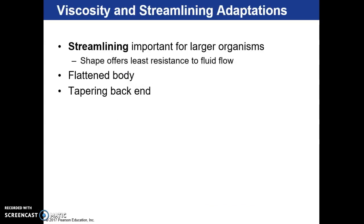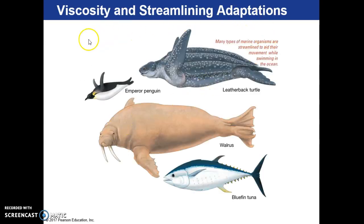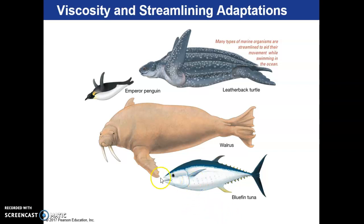Streamlining is another key adaptation. Think about how a fish looks streamlined — it has a flatter body and then a tapered back end, which helps avoid resistance as it swims through the water. A penguin, turtle, walrus, and fish all have a chunkier front end and narrow back end, which helps them flow efficiently through the water. Streamlining helps creatures put out as little energy as possible to get where they need to go.